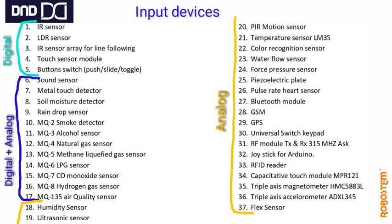A digital sensor is like a normal switch — it turns on and off. That is a digital device. An analog sensor, like a thermometer, does not give a fixed value. Every time it changes depending upon the climate. That is an analog sensor. This is the difference between digital and analog sensors.